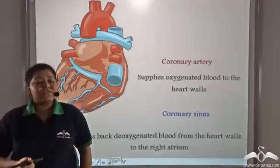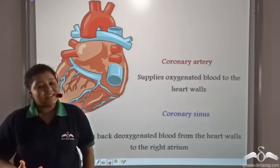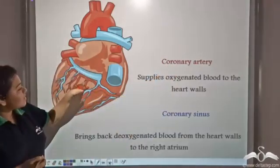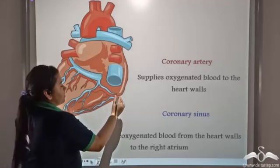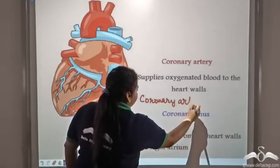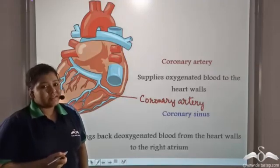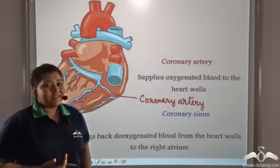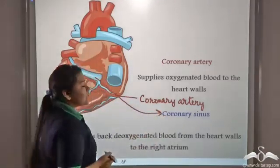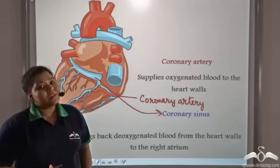Just like other parts of the body require blood for energy, the heart muscles do as well for continuous contraction and relaxation. So for that, there is a vessel known as the coronary artery. This coronary artery supplies oxygenated blood to the heart walls. Now the heart walls produce deoxygenated blood, and this deoxygenated blood is carried by a vessel known as the coronary sinus. The coronary sinus brings back deoxygenated blood from the heart walls to the right atrium.